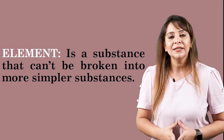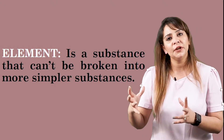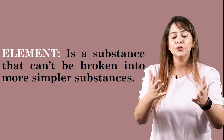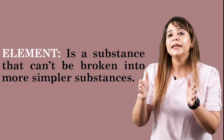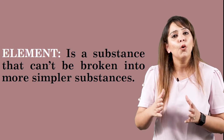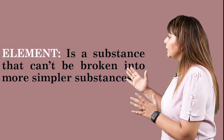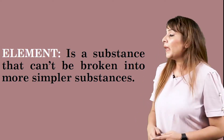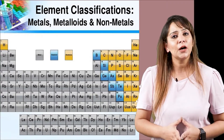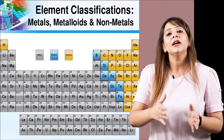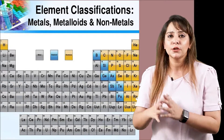An element is a substance that cannot be broken down into simpler substances. Elements are the substances that cannot be broken down into more simpler substances. All the symbols in the periodic table represent elements. If I talk about the number of elements discovered so far, there are 118 elements discovered.